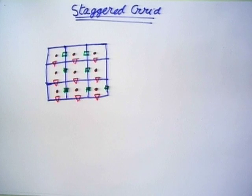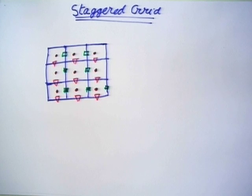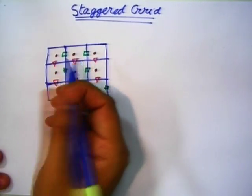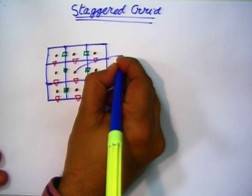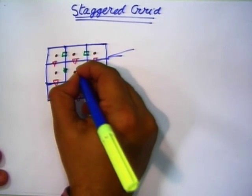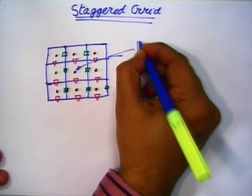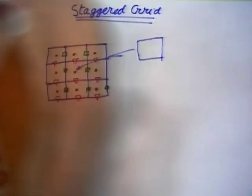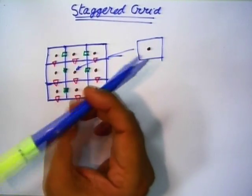When we apply the law of conservation of mass, x-momentum, and y-momentum, we have to take a control volume where the corresponding grid point lies at the centroid. For example, if you want to apply the law of conservation of mass, then the pressure grid point should lie at the center. I will show you one by one, starting with the pressure grid point, where pressure is lying at the centroid.